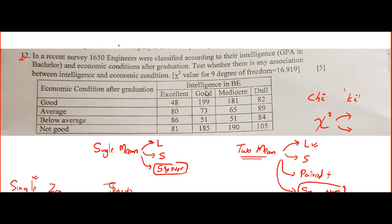Now, look at this. In this question also, they are asking for test of independence. And test of independence means there will be two parameters. Look at this. They are talking about intelligence in BE. And another parameter is economic condition after graduation. So, they had 1650 engineers in a survey. And they are classified according to their intelligence and the economic conditions after graduation. And someone wants to test whether there is some sort of dependence association between intelligence in BE and the economic condition after graduation. So, they have given four classifications here.